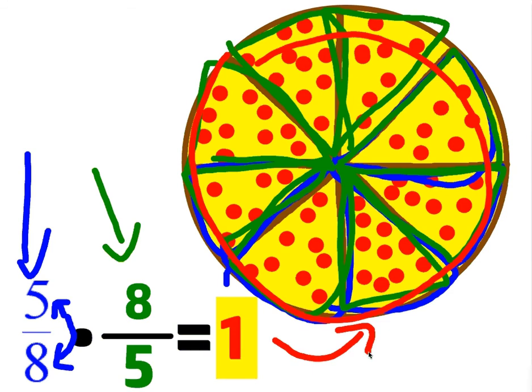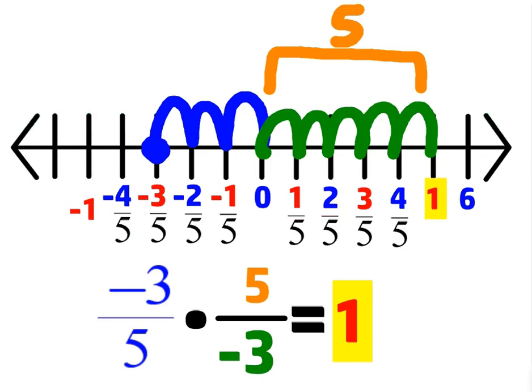So this works for any size pizza, and in general it works for any fraction. If I multiply it by the flipped version of the fraction, I end up with 1.